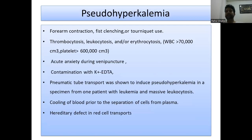Pseudo-hyperkalemia occurs with forearm clenching or tourniquet use causing false elevation. Other causes include thrombocytosis, leukocytosis (WBC more than 70,000), erythrocytosis, acute anxiety during venipuncture, EDTA contamination, pneumatic tube transport in specimens from patients with massive leukocytosis, cooling of blood prior to cell-plasma separation, and hereditary defects in red cell membrane transport.